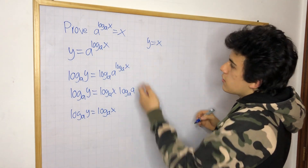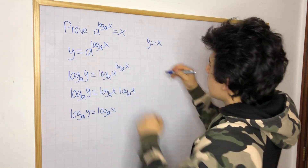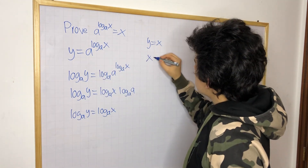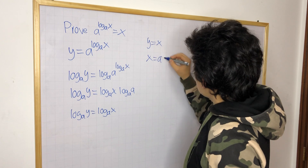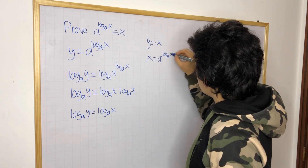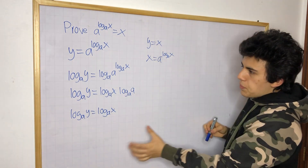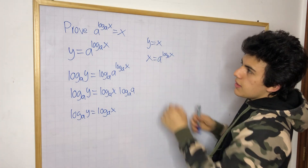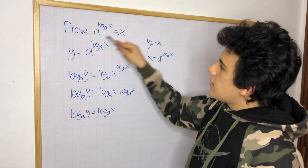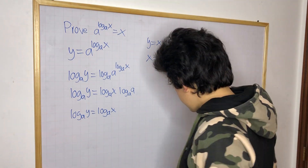And if y is equal to x, we know y is also equal to this right there. So x is equal to a to the log base a of x. And this is a proof for showing that this equation is true. So x is equal to x, y is equal to x. Thank you.